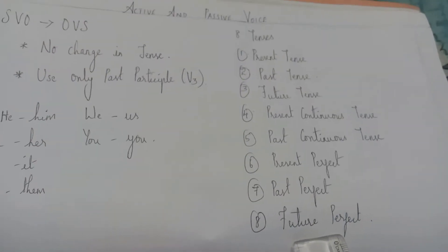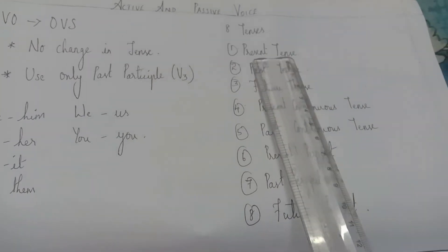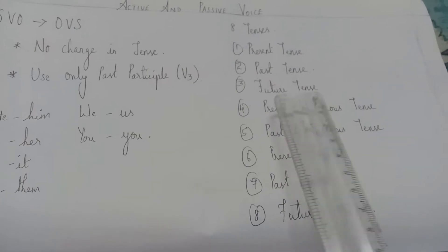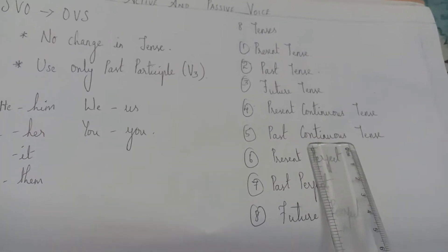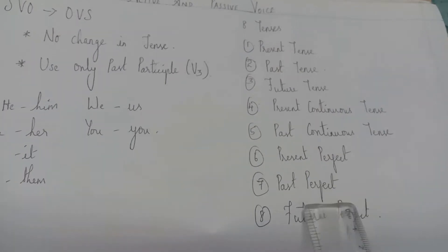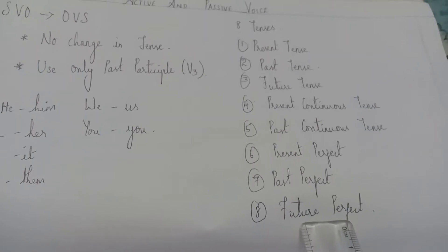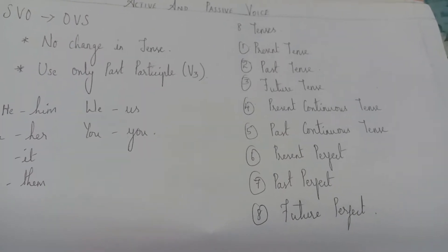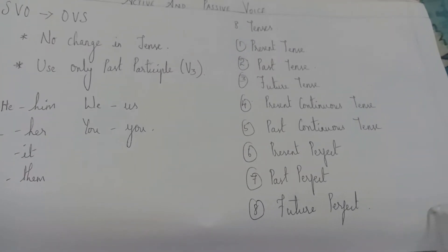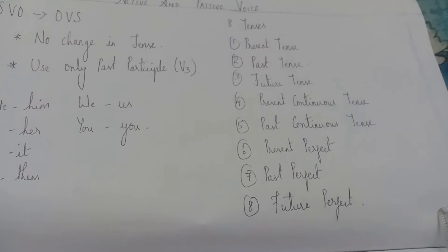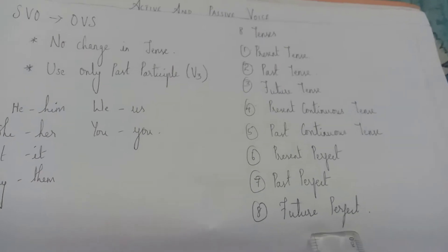So what are the 8 tenses we can change into passive form? Present tense, past tense, future tense, present continuous tense, past continuous tense, present perfect, past perfect, and future perfect. Only these 8 tenses, out of 12 forms, we can change into passive form.